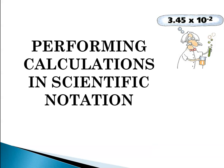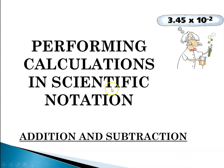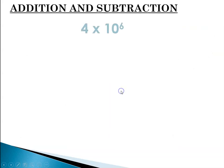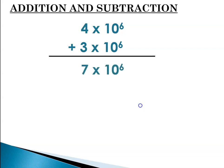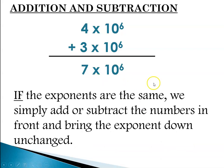So now let's do some calculations with scientific notation. And we're going to start with addition and subtraction. So if we have 4 times 10 to the 6, which is 4 million, and we're adding 3 times 10 to the 6, which is 3 million, those numbers are of the same magnitude so we just add them and we get 7 times 10 to the 6 or 7 million.